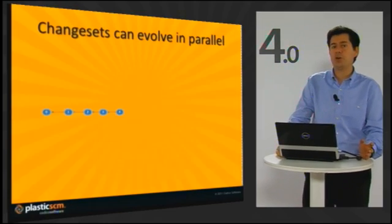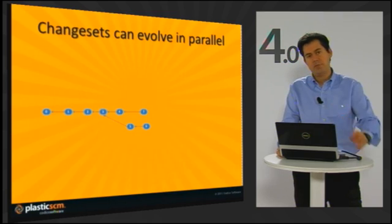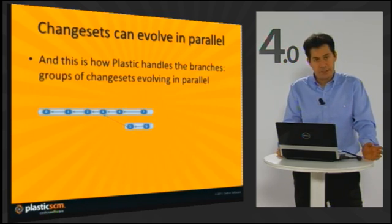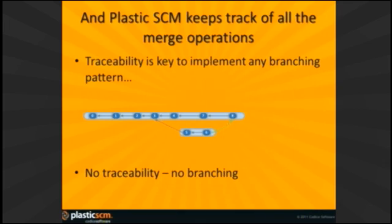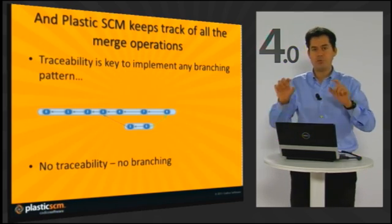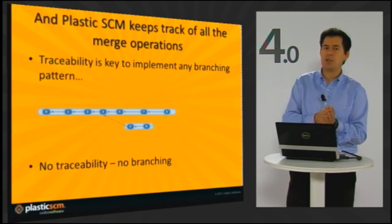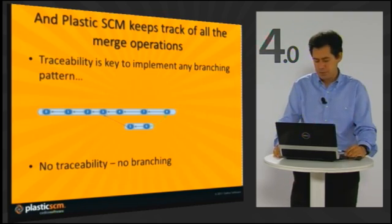Changesets can also evolve in parallel, and that's where the fun starts. A branch is just a container of changesets linked together. Plastic also keeps track of merging relationships — what we call merge traceability or merge tracking. Something very important to keep in mind: no traceability means no branching. If you don't have proper merging, you don't have branching at all, because it's a little bit pointless.